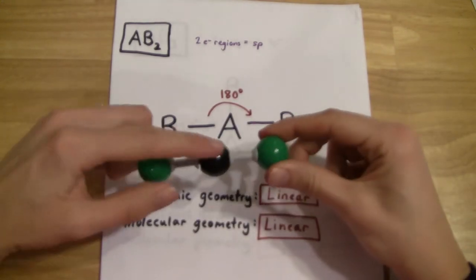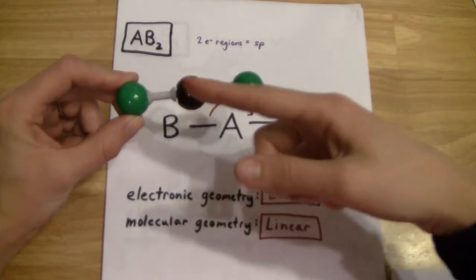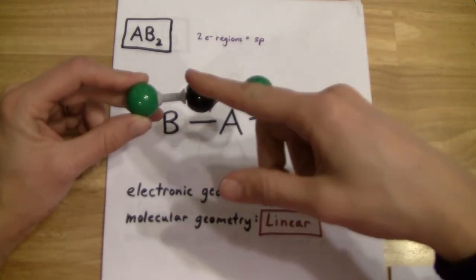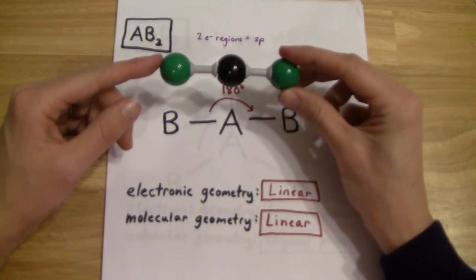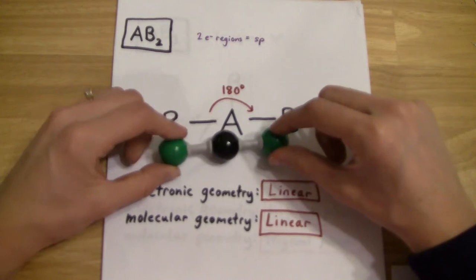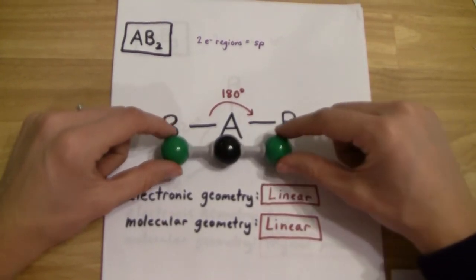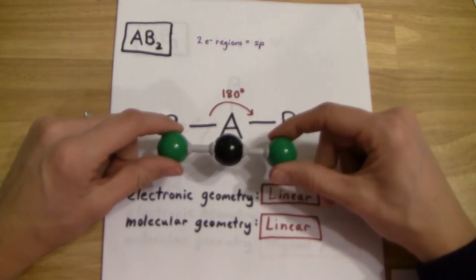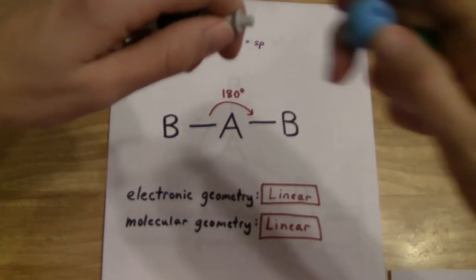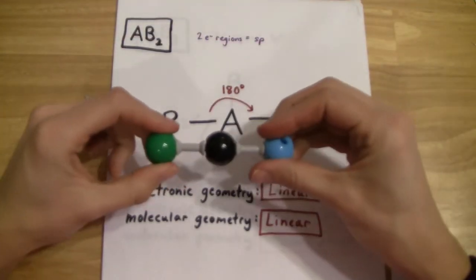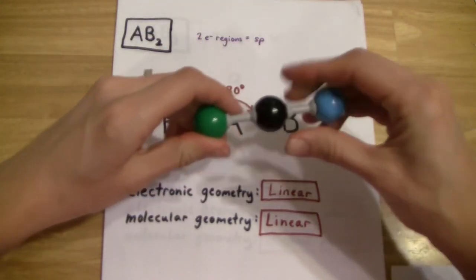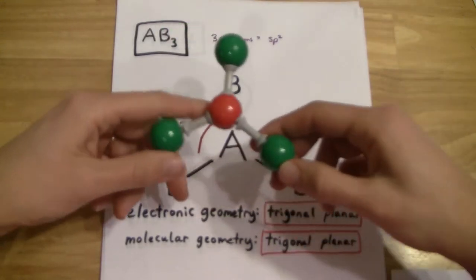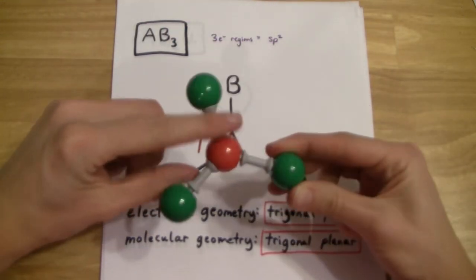If we have a molecule with the AB2 geometry — where there are no non-bonded lone pairs on the central atom — then the electronic geometry is linear and the molecular geometry is linear. If the two atoms bonded to the central atom are the same, then the net dipole would be zero, and we would predict no net dipole and that it would not be polar. If the atom were a different, more electronegative atom, there would be a net dipole towards the more electronegative atom.